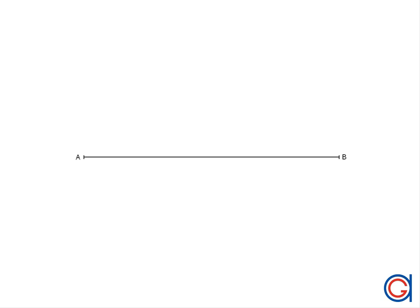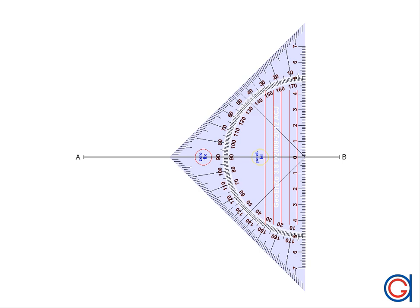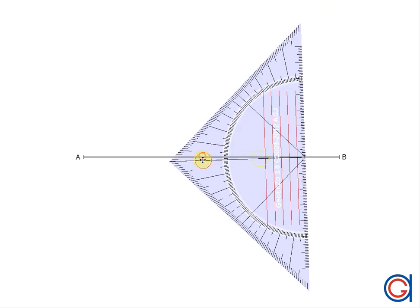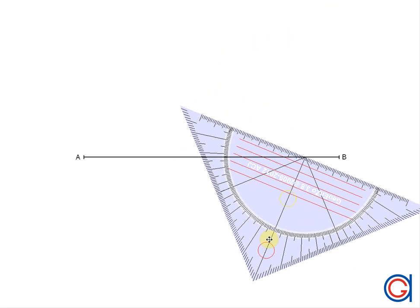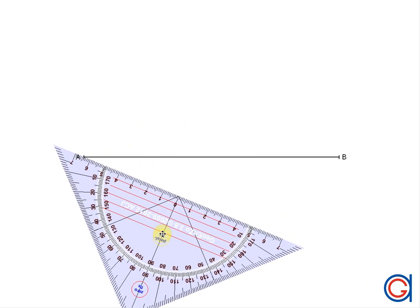Hello, today we are going to draw an oval given its major axis AB. The first step is to divide the axis AB into three equal parts using Thales' theorem.